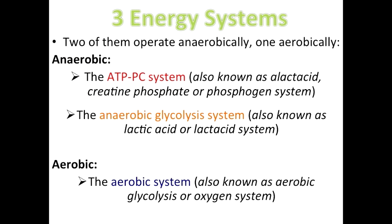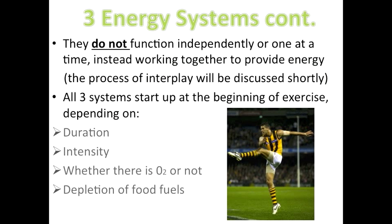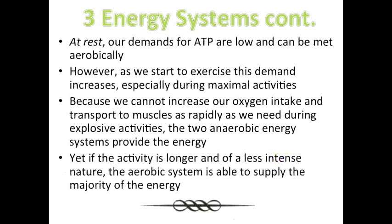So there are three main energy systems: the ATP-PC system, the anaerobic glycolysis system, and the aerobic system. They all work together to provide energy and start up at the beginning of exercise, depending on duration, intensity, the presence of oxygen, and the depletion of food fuels.